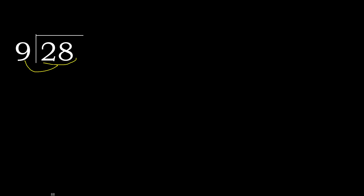28 divided by 9. 2 is less, therefore next 28. 28 is not less, therefore work with 28. 9 multiplied by which number is nearest to 28 but not greater? 9 multiplied by 4 is greater, so multiplied by 3: 27 is not greater. 28 minus 27 is 1. Next.